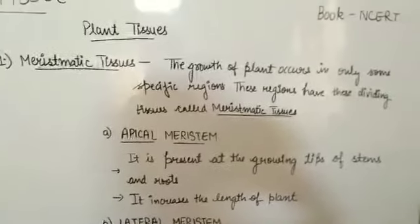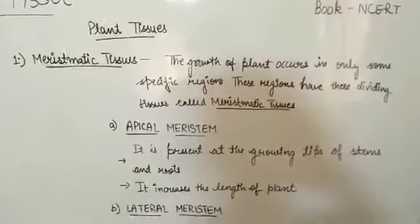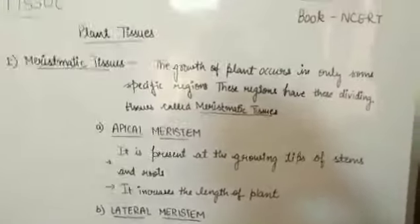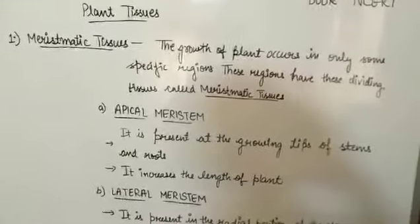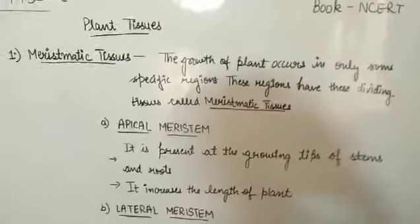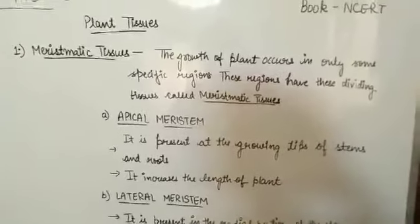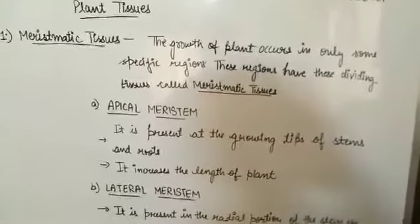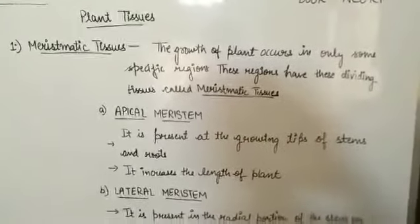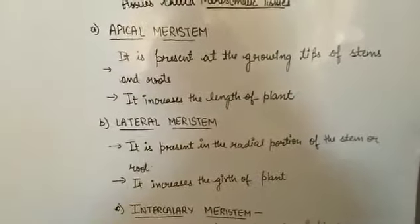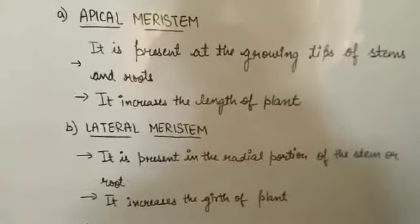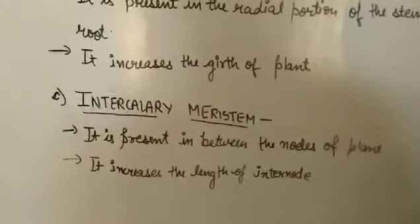Meristematic tissues are those tissues present in specific regions of the plant responsible for the plant's growth. They increase the size and length of the plant. Meristematic tissues divide rapidly to grow the plant and are of three types: apical meristem, lateral meristem, and intercalary meristem.